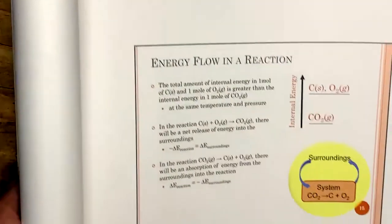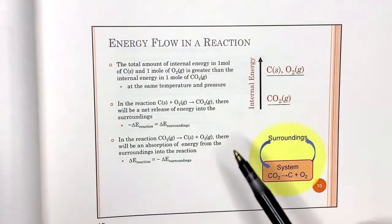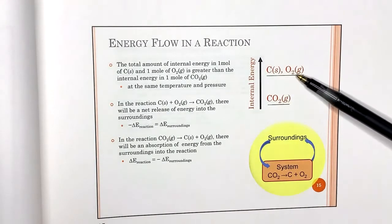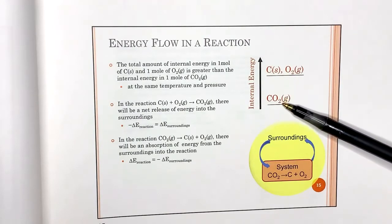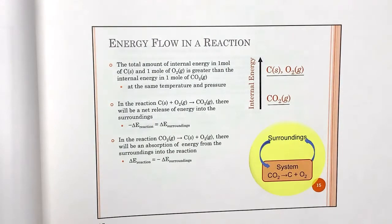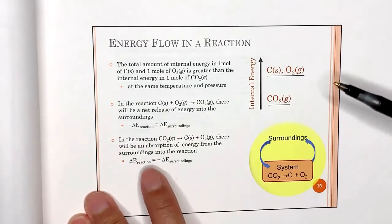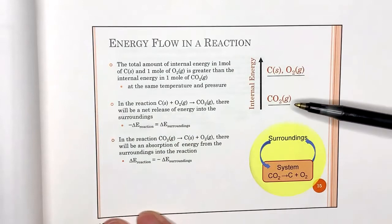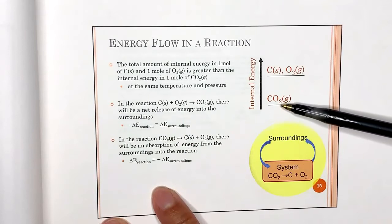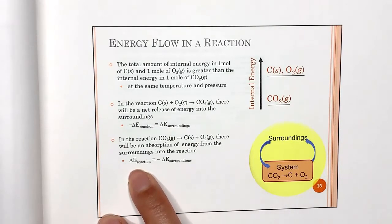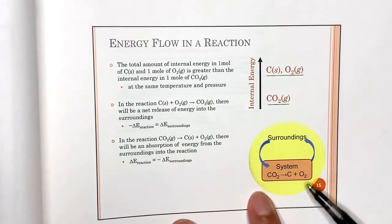For a reaction like carbon and oxygen forming carbon dioxide, the system drops in energy, so it has a negative sign and the surroundings have a positive sign. The reverse reaction — breaking CO₂ into carbon and oxygen — goes from low to high balance, gains energy, and has a positive sign for the reaction with a negative sign for the surroundings.